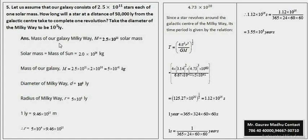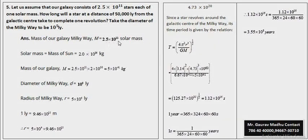Solution: हमें जो given है वो देखें। पूरी milky way galaxy का mass आजाएगा 2.5 x 10 raised to power 11 solar mass। एक solar mass के अंदर 2 x 10 raised to power 30 kilogram होते हैं। Total number of stars 2.5 x 10 raised to power 11 को एक star के mass से multiply करेंगे, तो mass of the galaxy आजाएगा 5 x 10 raised to power 41 kilogram।